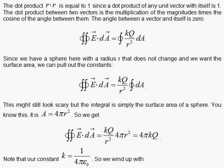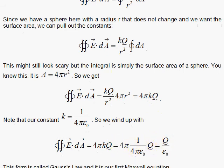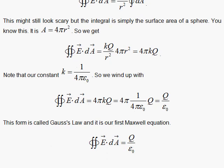Now, if we substitute for k, the 1 over the 4π epsilon sub 0, we have the 4π. We have the k being replaced by this arrangement here. We have the q. And you see the 4π's cancel. And the result is q over epsilon sub 0. And we are finished. That is Gauss's law, right there. And that is the first Maxwell equation. It's Coulomb's law transformed into an integral equation.